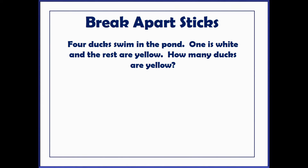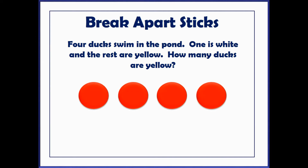A great way for helping students solve problems with missing add-ends is to use break-apart sticks with concrete manipulatives. In this problem: four ducks swim in the pond, one duck is white and the rest are yellow — how many ducks are yellow? We know the total is four. We also know one part, which is one white duck. So we use our break-apart stick to show the one white duck. Now it's easy to see the other part has three yellow ducks. Whenever we represent problems with manipulatives, we also want to start making connections between other representations as well.